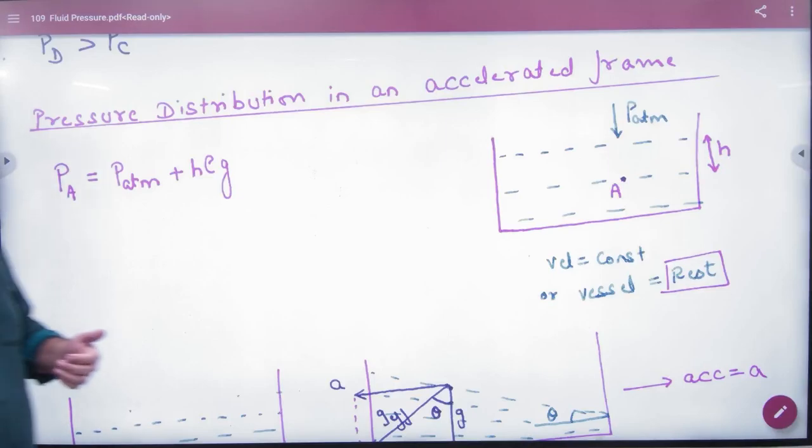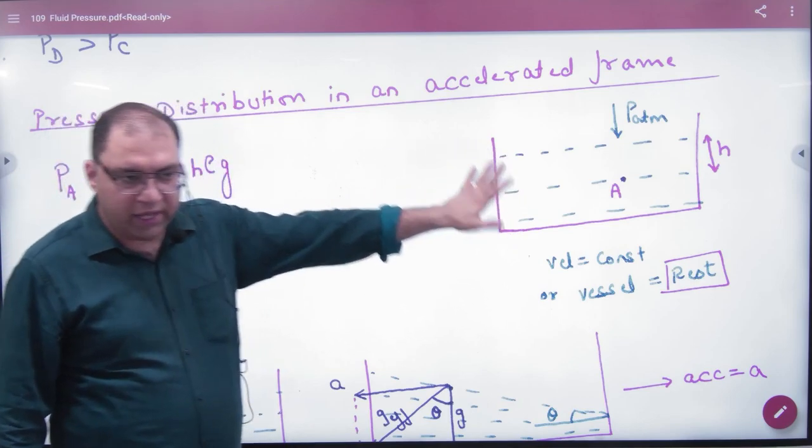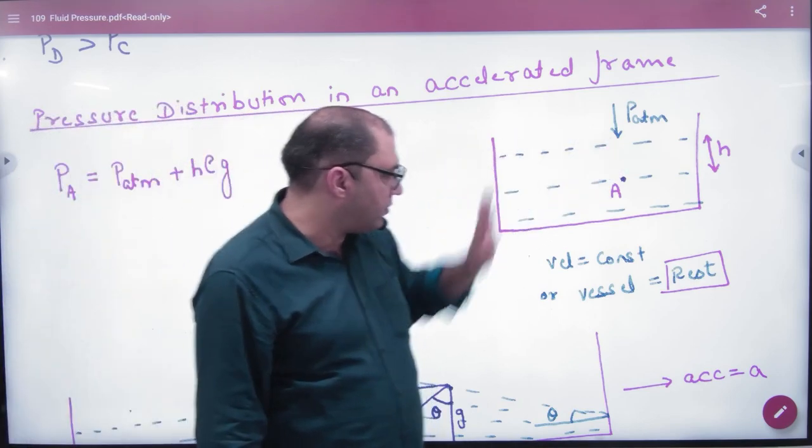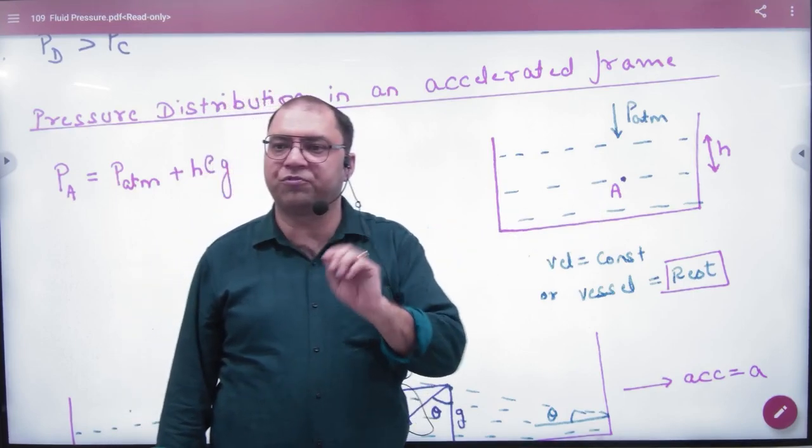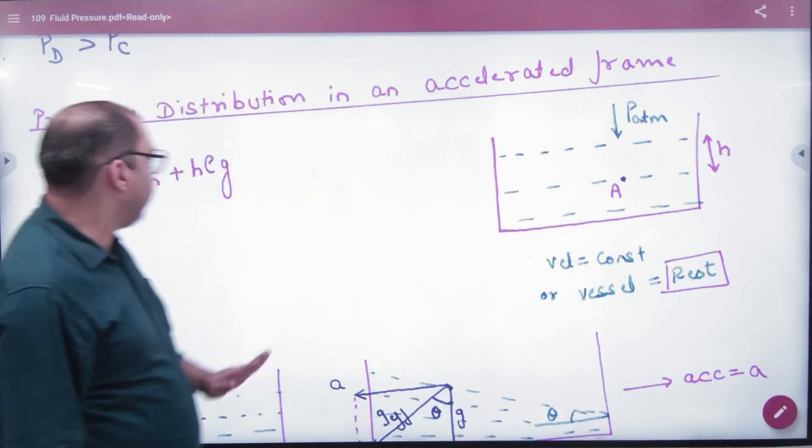So the pressure distribution in an accelerated frame has been explained. Imagine this is a container, it is A point and it is H distance. And I will ask you what pressure will happen to you. You will say that P is atmospheric plus H-ρg. This is on the rest of the vessel.